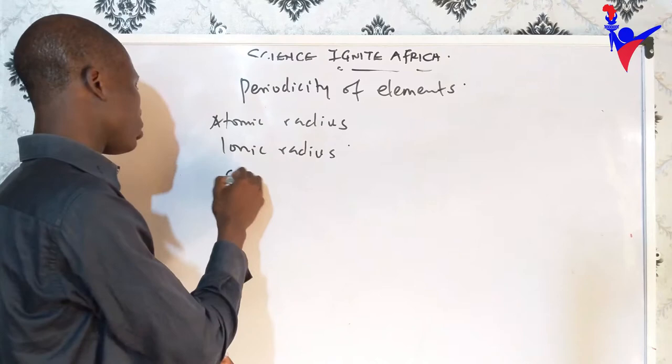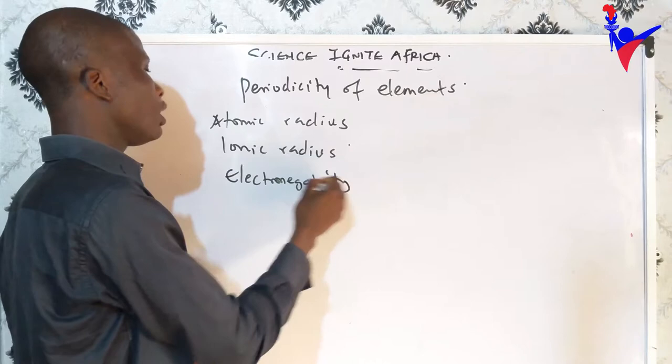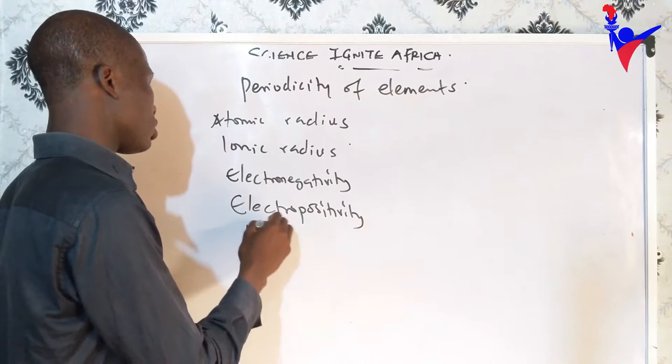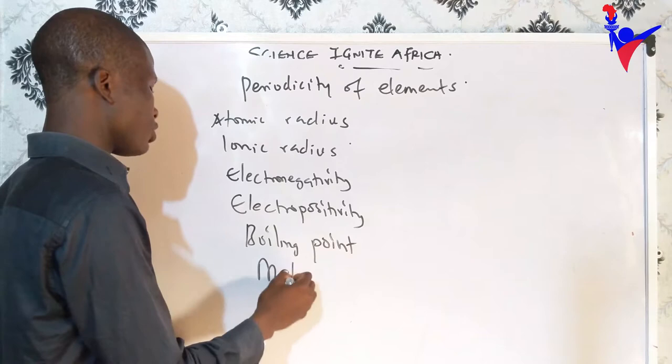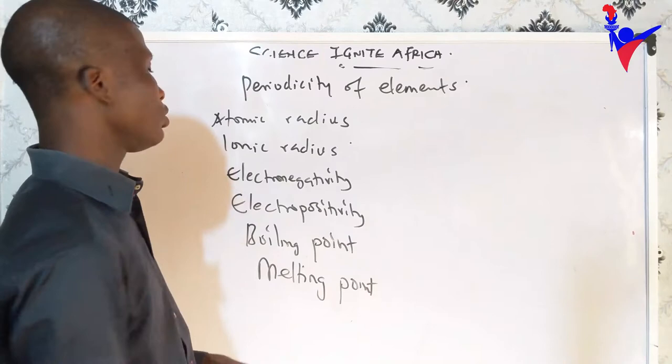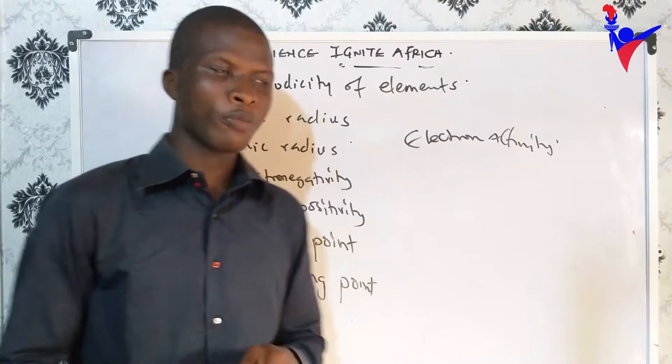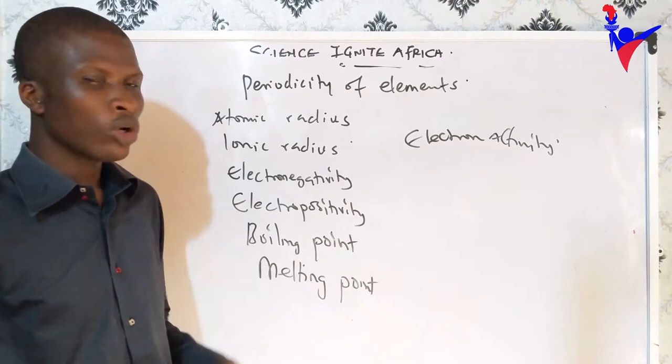Other periodic properties include electronegativity, electropositivity, boiling points, melting points, and electron affinity. Whenever you are describing elements in the periodic table, these properties are very important because almost all elements exhibit them, though in varying degrees and frequency.